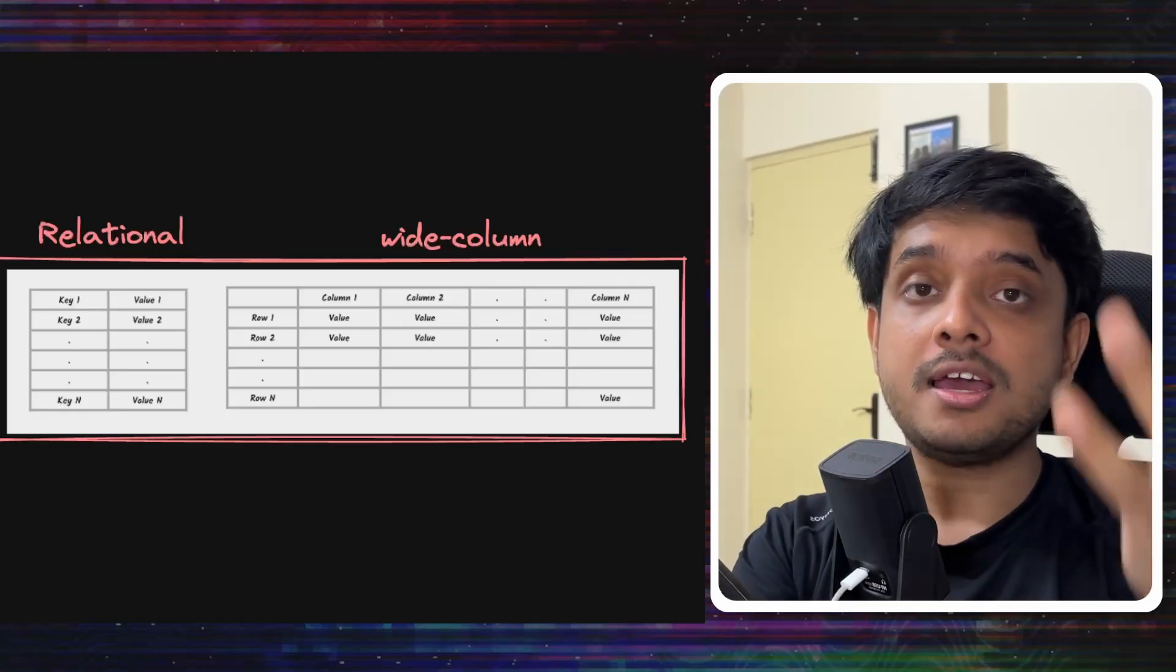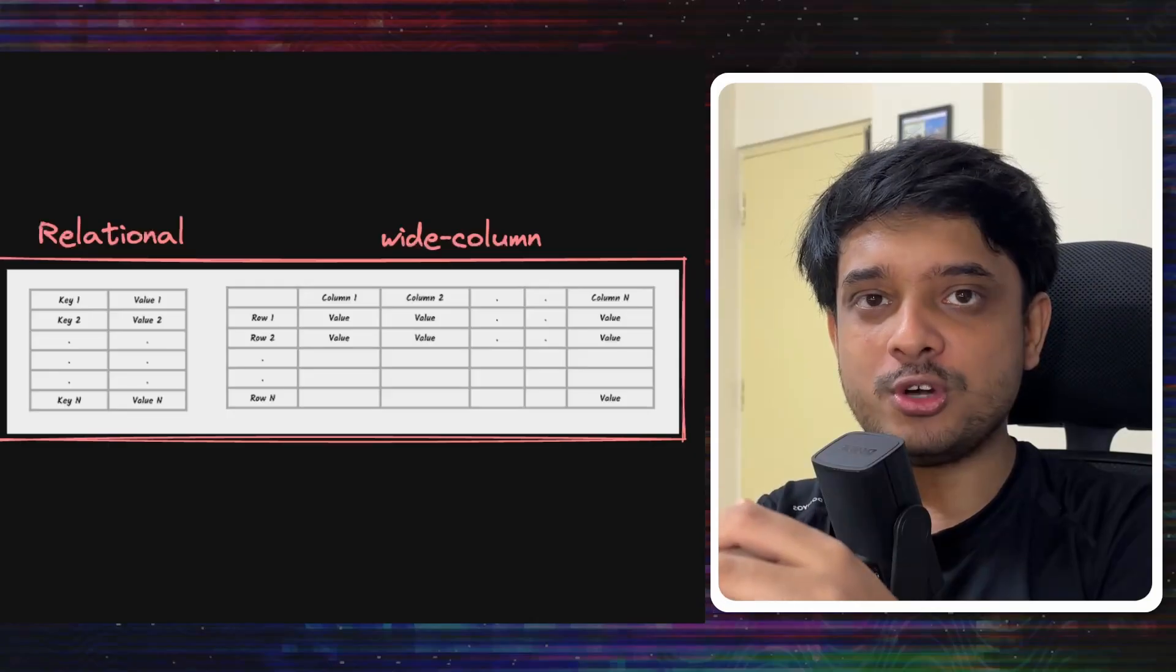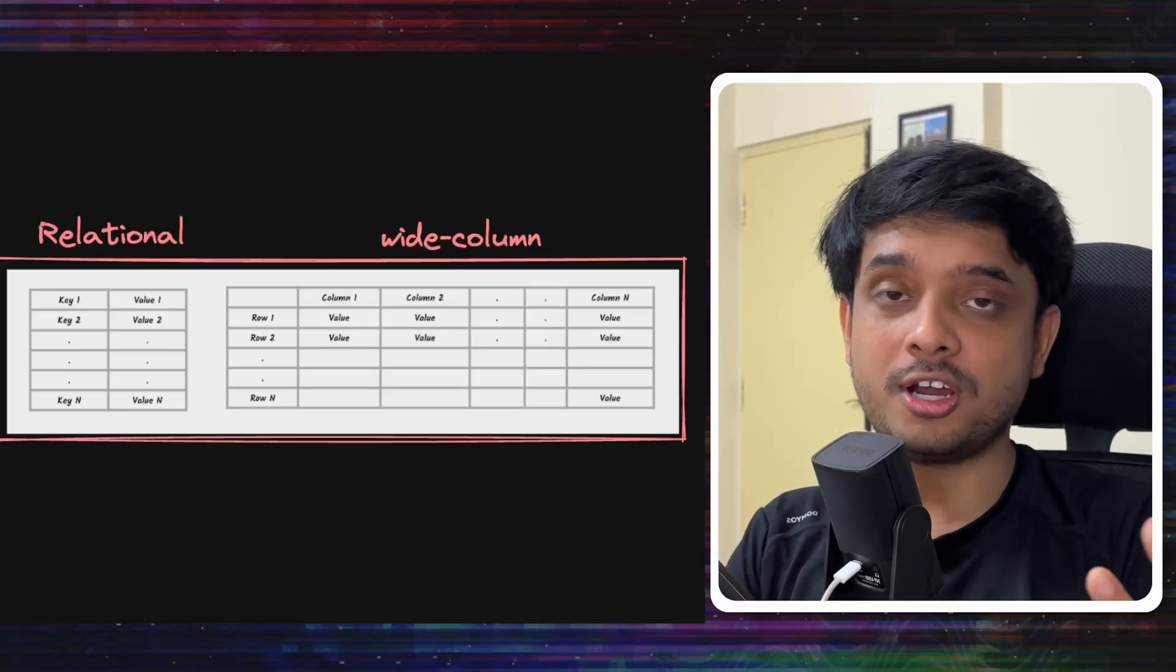It doesn't really matter. The schema is flexible. Even for a particular column it can have multiple values under it for the same row. Cassandra as you might know is most probably the most popular wide column database out there.